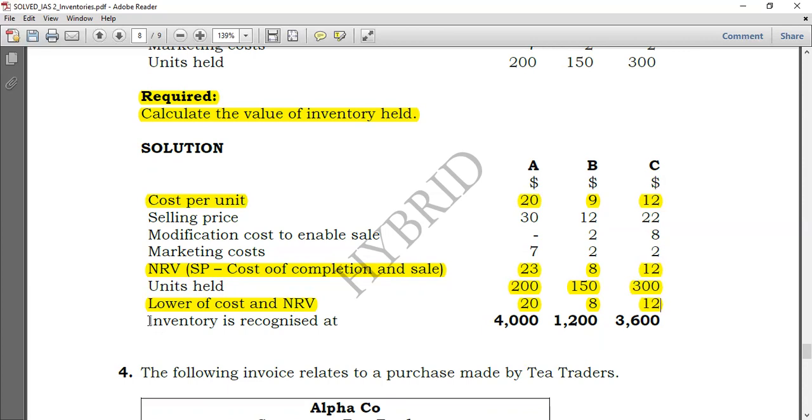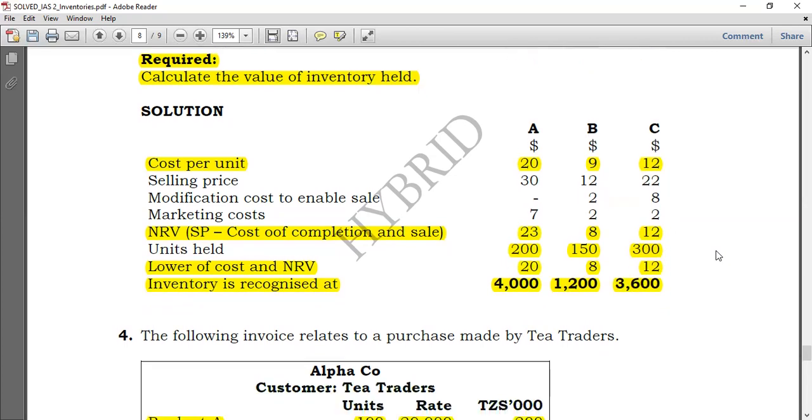So this is what we do. Now, I'm going to value inventory. What amount do I recognize inventory? It was $20 per unit, but there are 200 units. So 20 times 200, I have 4,000. For product B, it is $8 per unit, but there are 150 units. So 8 times 150, I have 1,200. For product C, cost per unit is $12, and 300 units, I have 3,600. So this is what we do. And actually, the measurement is ready.